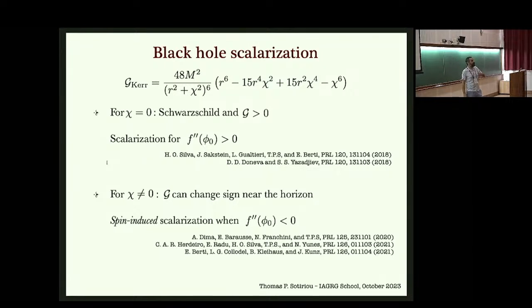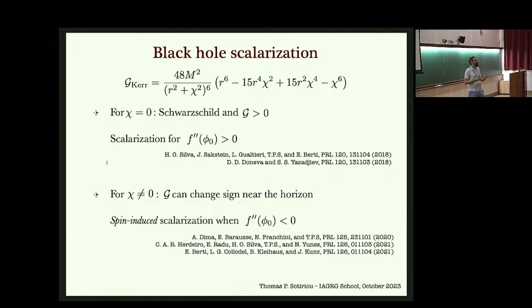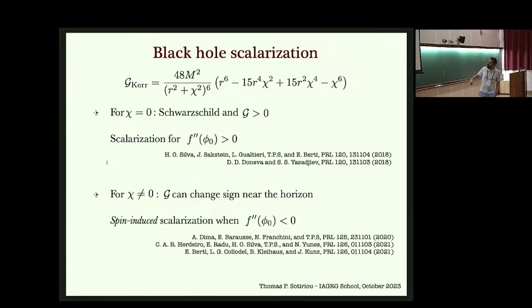For Schwarzschild, this is controlled only by the mass of the black hole. G is manifestly positive and grows towards the horizon. The smaller you make the mass, the larger the curvature near the horizon — the larger the magnitude of the effective mass. So if you have the right sign, you get an instability for smaller black holes. Larger black holes remain Schwarzschild. This is an example where below a mass threshold you get scalarization; above it you just have Schwarzschild.